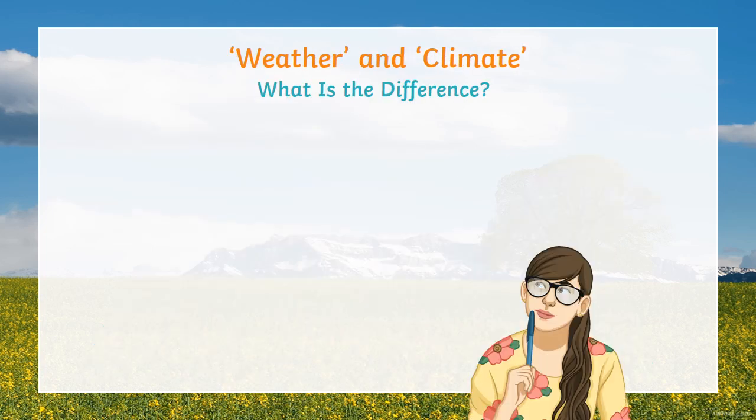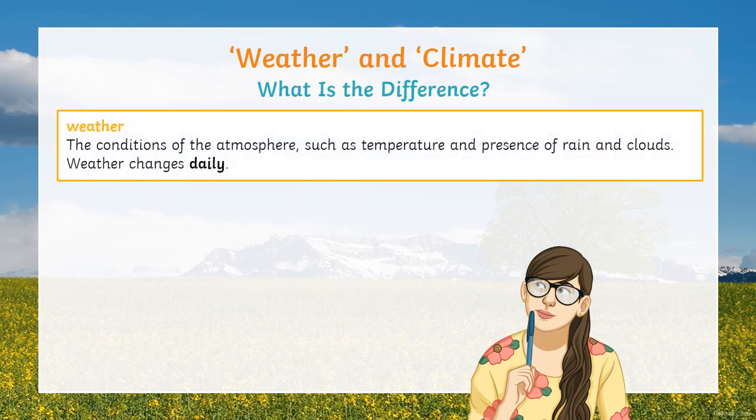What is the difference between weather and climate? Weather is the conditions of the atmosphere, such as the temperature and the presence of rain and clouds. Weather changes daily, so weather is only for a short period of time.